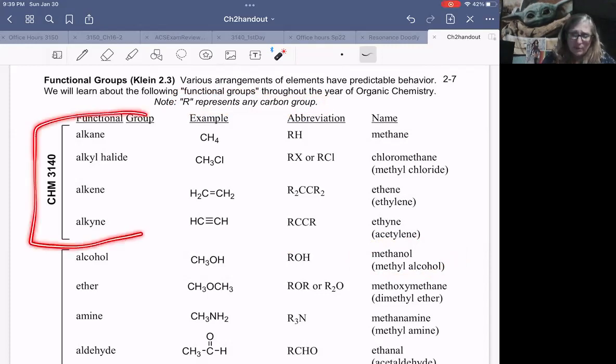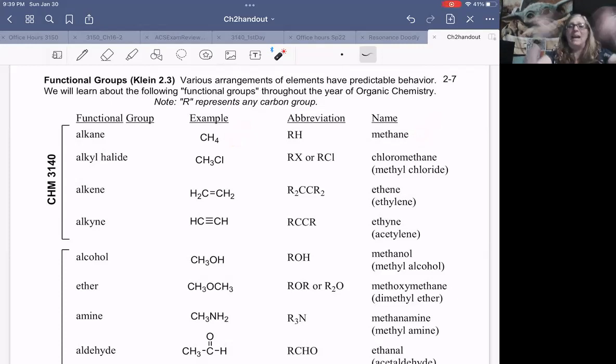What are the functional groups you're going to learn this semester in Chem 3140? The very first functional group is actually the lack of functional groups is just called an alkane. That's when all you have is carbons and hydrogens. When you put a halogen on a carbon chain, like a chloride, bromide, iodide, we could abbreviate those as just RX. Those are described as alkyl halides. And then all the other functional groups we're going to learn this semester are alkenes and alkynes.